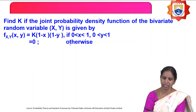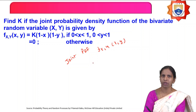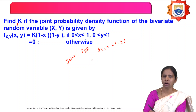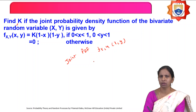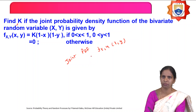We have given the joint probability density function of two random variables x and y, that is f(x,y). We have to find the value of k. To find the value of k, we have to use the properties of the joint probability density function.